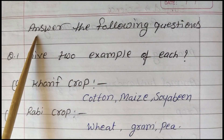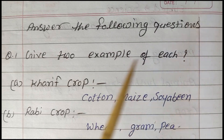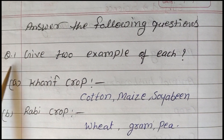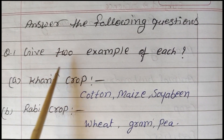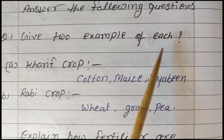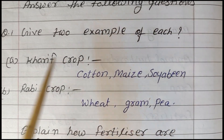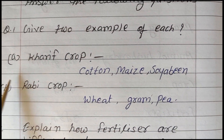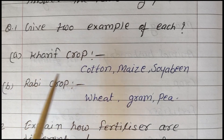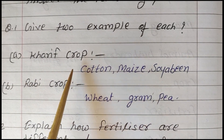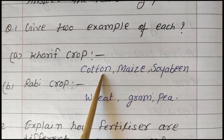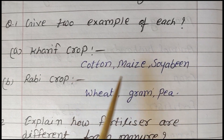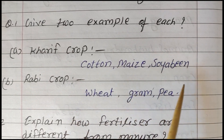Answer the following questions. Question 1: Give two examples of each. Kharif crops — cotton (kapas) and maize (makka).